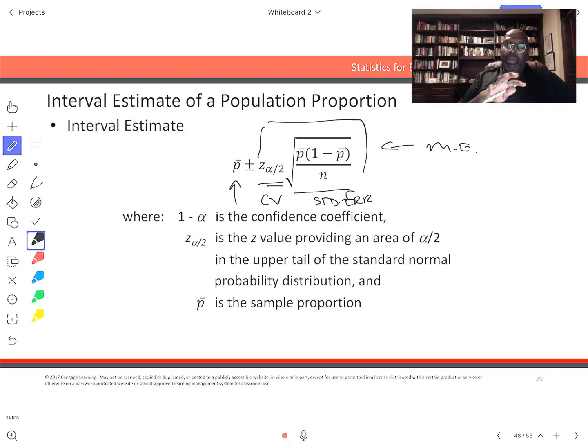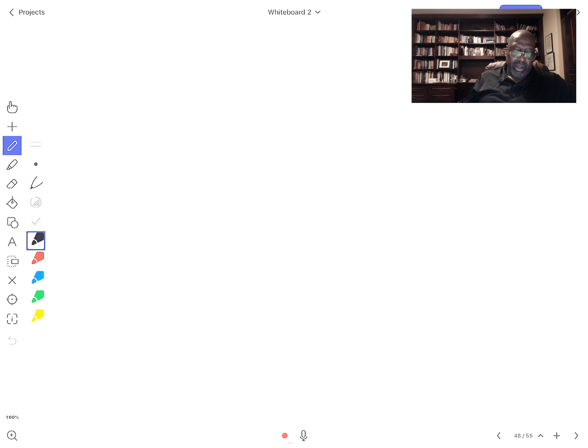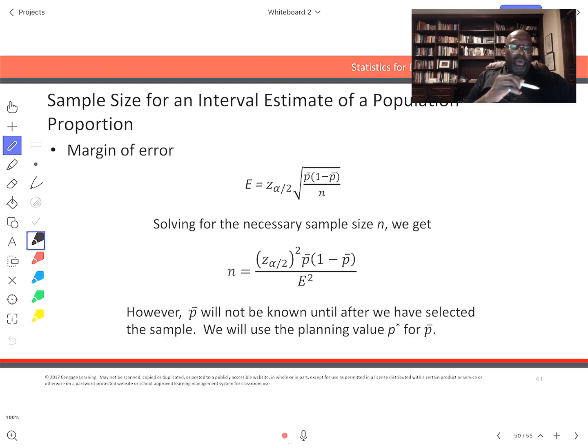If we want a particular margin of error, how then do we get the sample size? If we are interested in a sample size for a particular margin of error, we specify the error, equate this part to it, and when we do the manipulation of the formula, we will get our sample size n given by this formula right here.